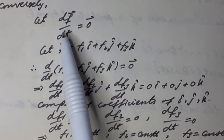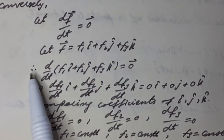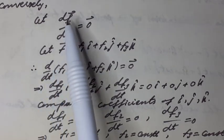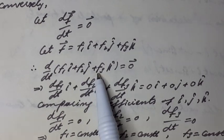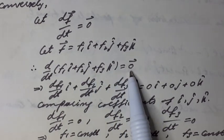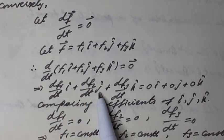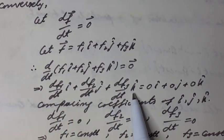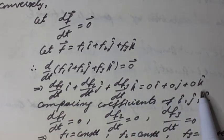Conversely, let df vector over dt equal zero vector. Let f vector equal f1 i-hat plus f2 j-hat plus f3 k-hat. Therefore, d by dt of f vector equals d by dt of f1 i-hat plus f2 j-hat plus f3 k-hat, equal to zero vector. This can be written as df1 over dt i-hat plus df2 over dt j-hat plus df3 over dt k-hat equal to 0 i-hat plus 0 j-hat plus 0 k-hat.